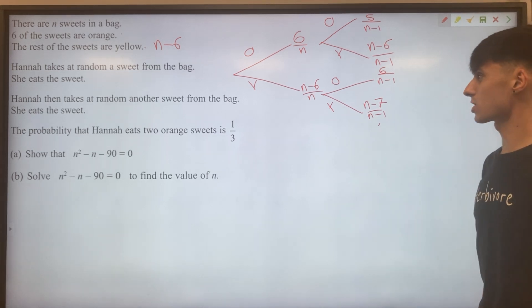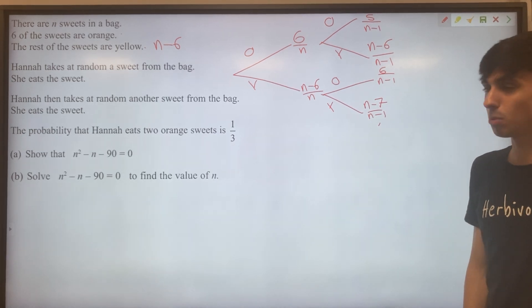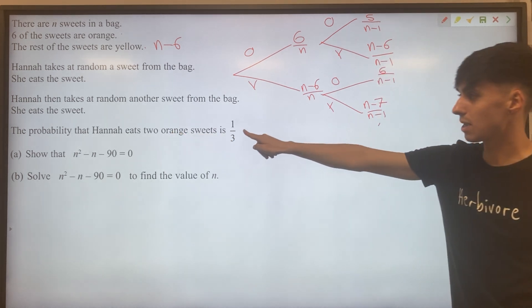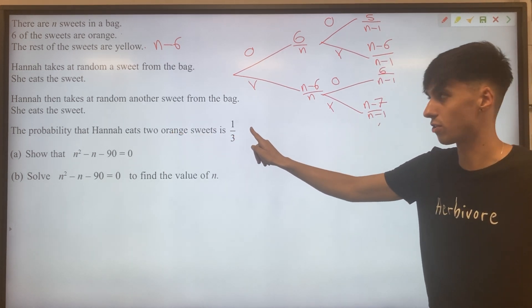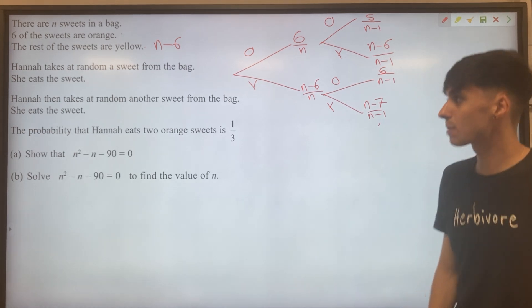So we filled in the rest of our tree. At this point, we're good to use this statement here. The probability that Hannah eats two orange sweets is one third.